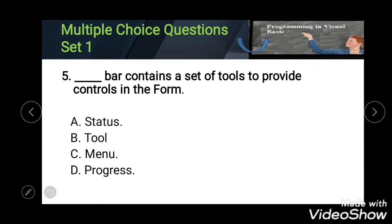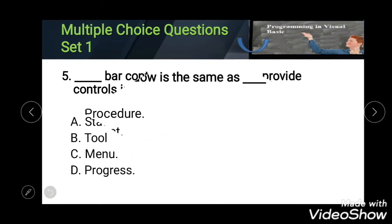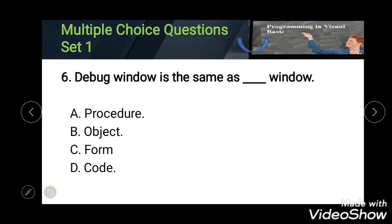Sixth question: debug window is the same as blank window. Options: Procedure, Object, Form, and Code. The correct answer is Code Window.